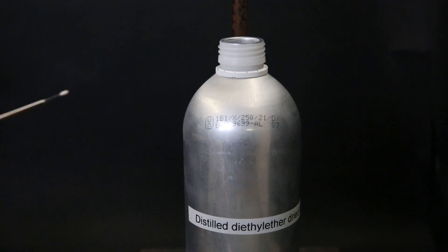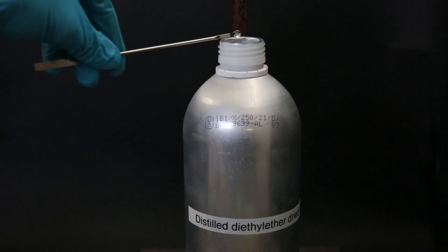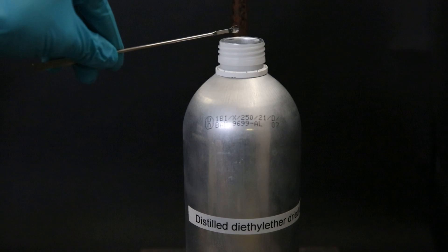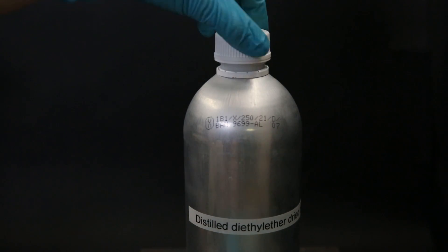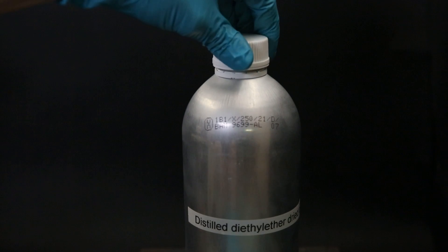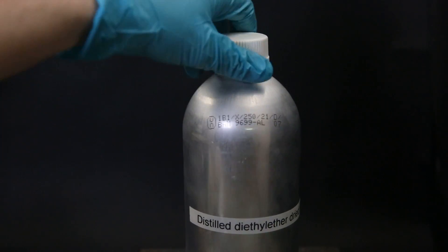I then add a very small scoop of hydroquinone, which acts as an inhibitor to prevent peroxide formation during storage. The recommended inhibitor concentration when using hydroquinone is only 0.002%, which is about 3 mg. Since I don't have an analytical balance, I just put in a very small scoop, which is likely only a few milligrams. Now that it is finished, I can safely store and use my diethyl ether, which I will store in the fridge and use in one of my future videos.